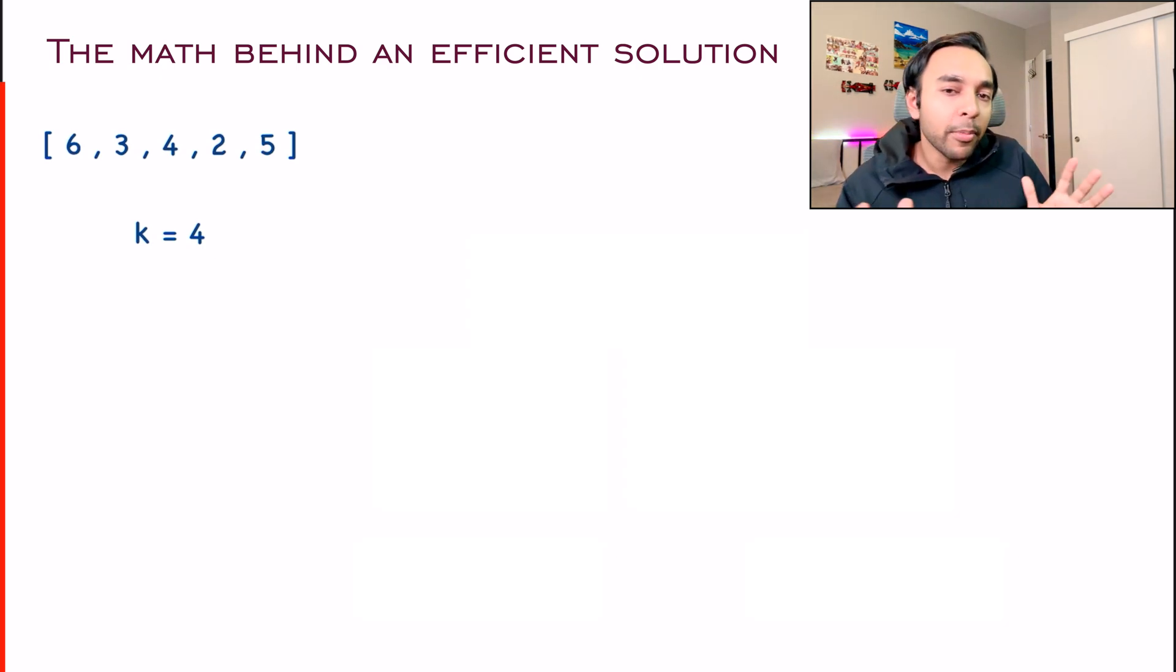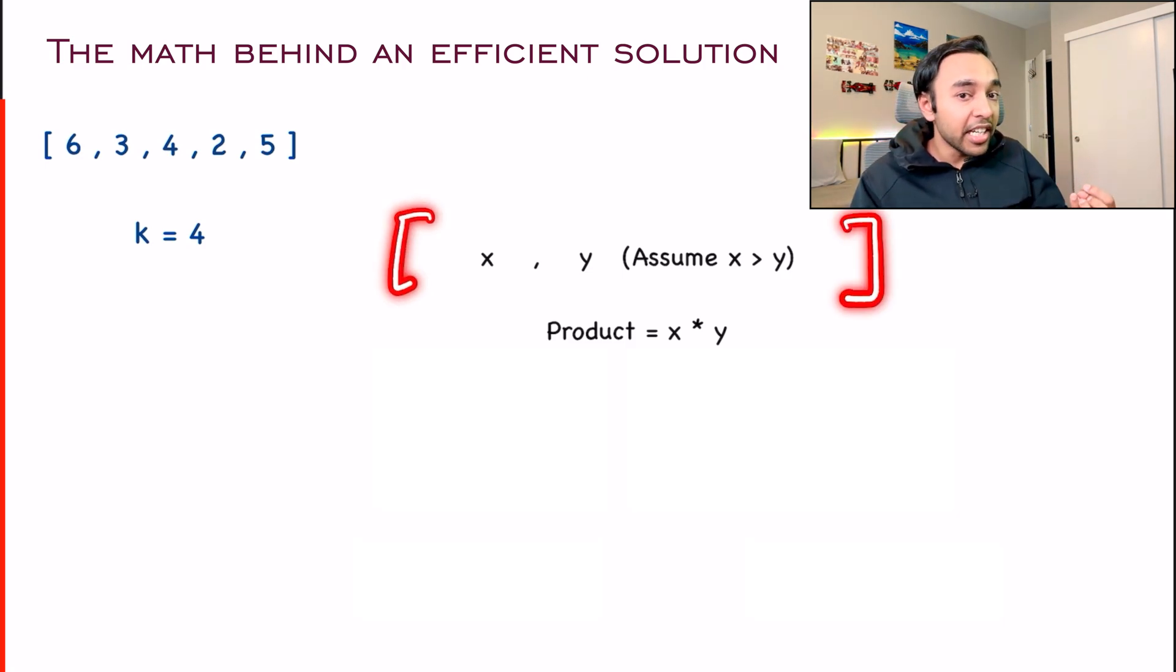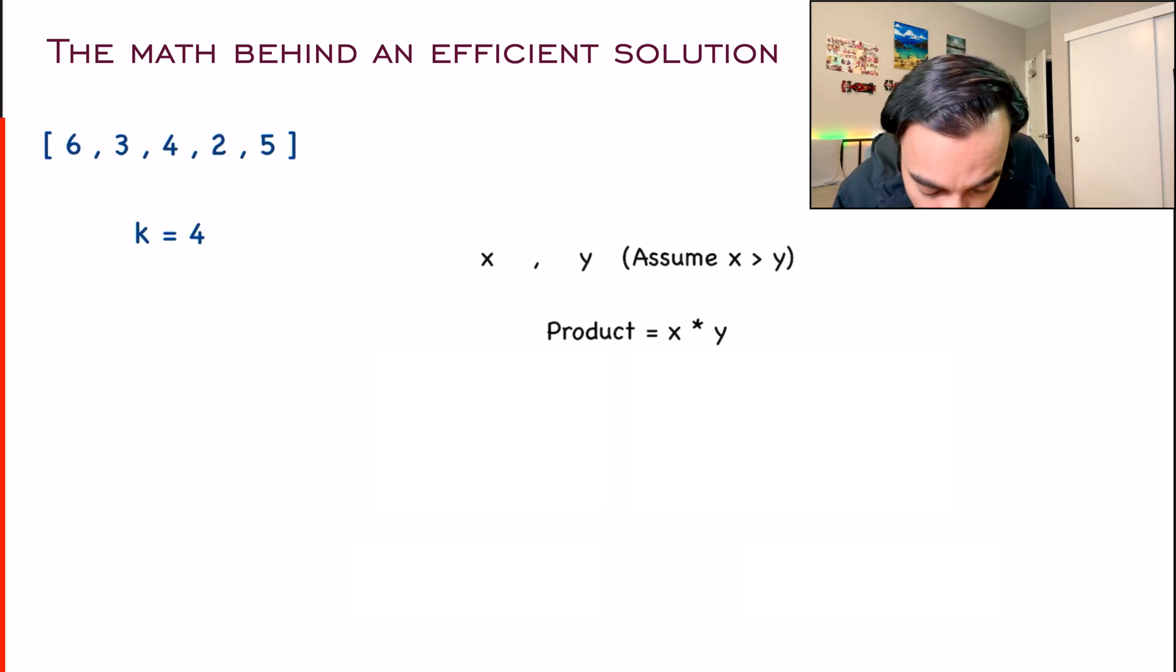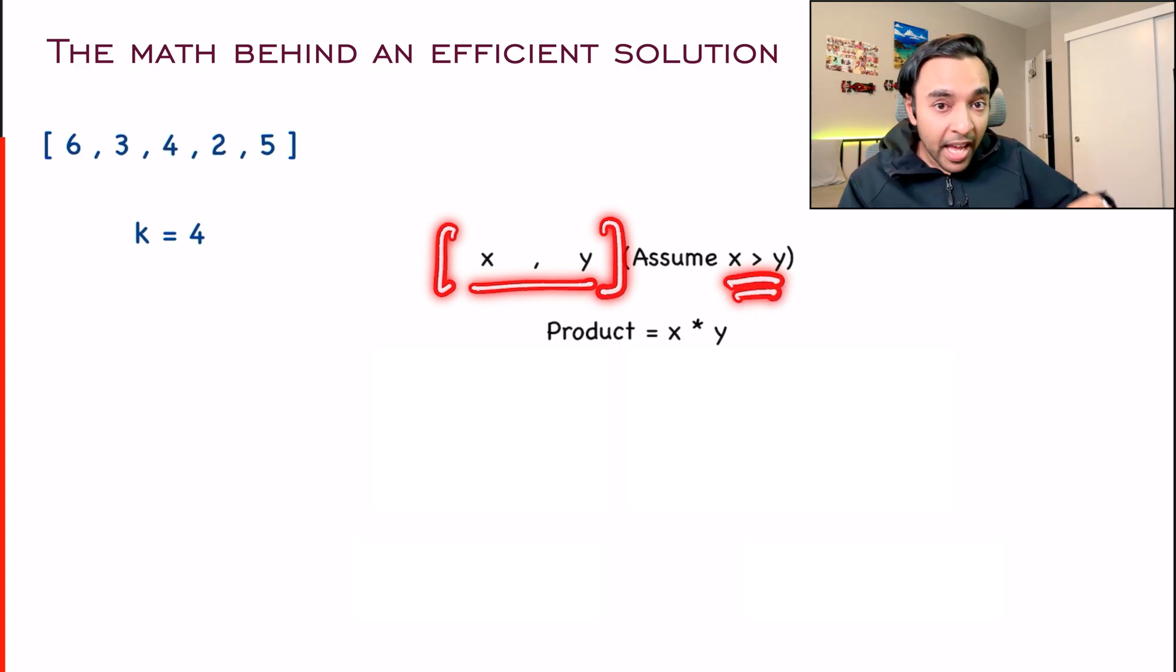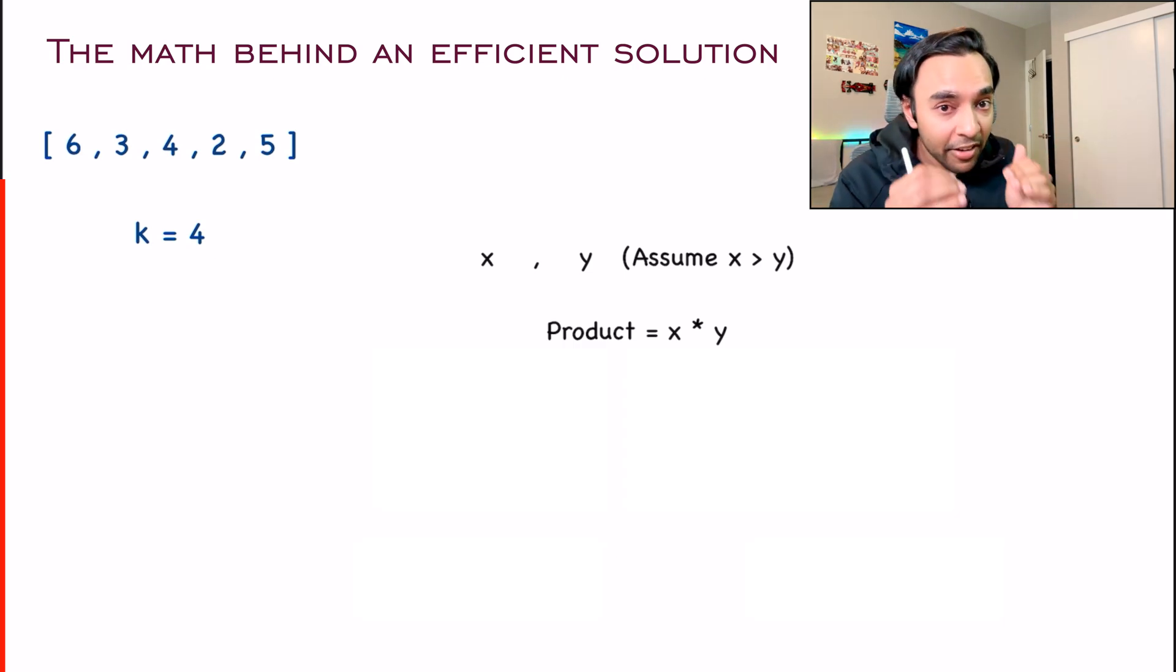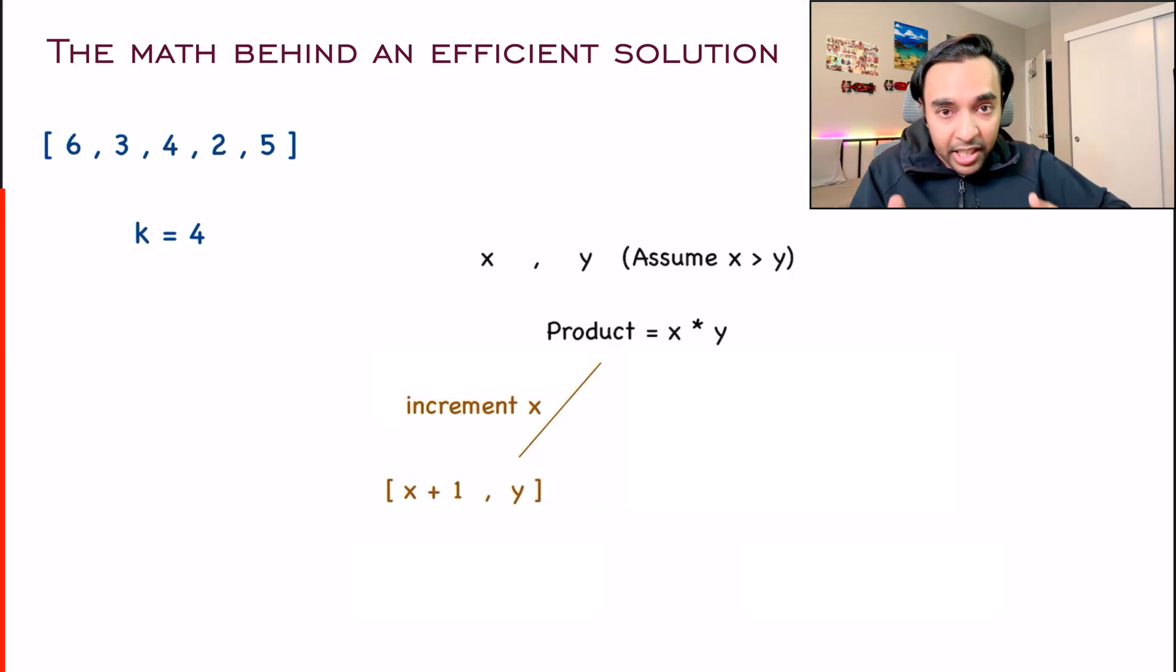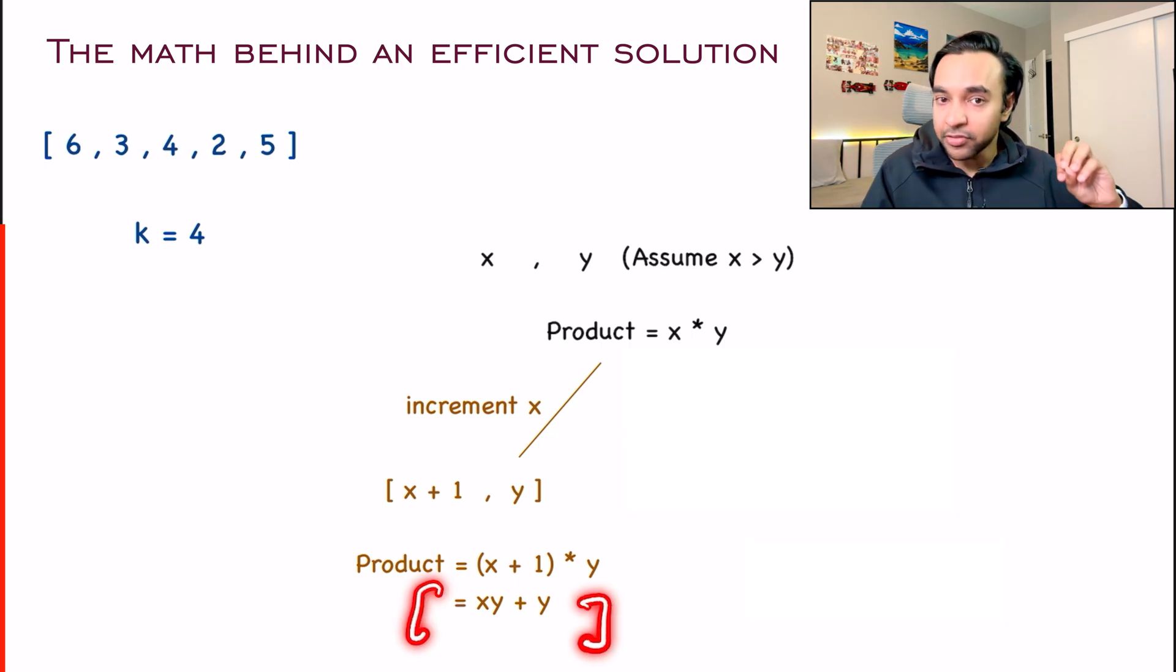We know for a fact that at every instance, we can only increment a number just by one. That is the only choice we have. So for a moment, forget about the problem altogether. Let's say that I have two integers possible and we will try to decide that, hey, where should I increment a one such that my product is larger? So in the current scenario, when I have two numbers, x and y, let's assume that x is greater than y. And now the product of these two numbers will be x*y, right? When you are doing an operation, either you will increment x or you will increment y. These are the only two choices available at every scenario. So if I am incrementing x, what does my array become? My array becomes (x+1) and then a y. And if you found out the product, what do you get? You will get x*y + y.